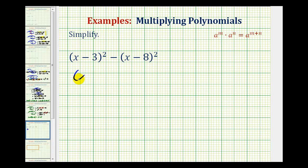So we'll have the quantity x minus three times the quantity x minus three, minus the quantity x minus eight times the quantity x minus eight.